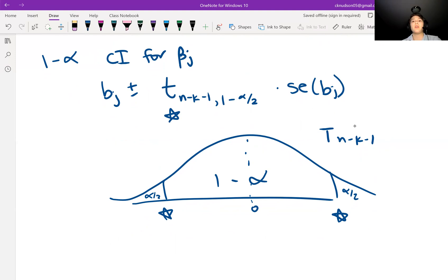So then once we go ahead and crunch this number, we can say that we are 95% confident that the true value of beta J lies within that interval.